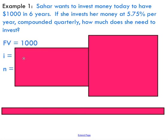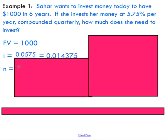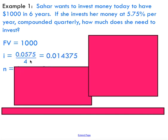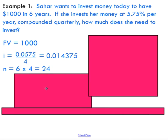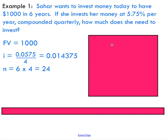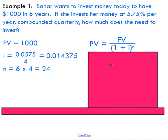We know the future value is $1,000. The interest rate is 5.75%, but compounded quarterly, so we divide by four — getting a fourth of that interest four times throughout the year. Over six years, that gives us four compounding periods times six, so n equals 24. Now it's just a matter of substituting into the formula.